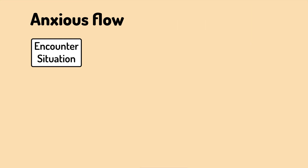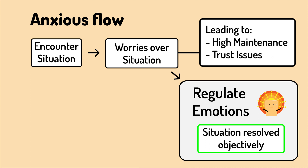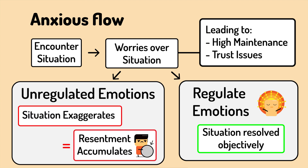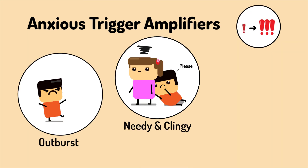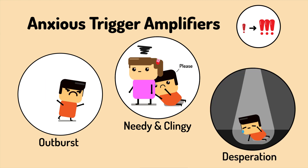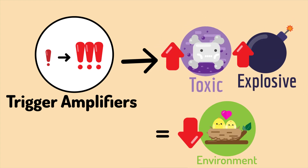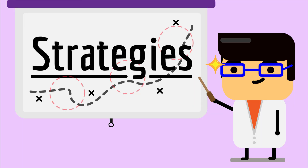People who are anxious tend to express their worries over the situation, leading to a higher-maintenance relationship. If the anxious player manages to regulate their emotions and express things objectively, the situation can be overcome peacefully. However, if unregulated, the problem turns exaggerated and resentment accumulates. Some anxious trigger amplifiers include outbursts of emotions, needy and clingy behaviors, and desperation. Unfortunately, these amplifiers usually lead to an explosive, toxic relationship environment. And there are no simple battle plans that fit all situations — there are, however, many strategies everyone can use.